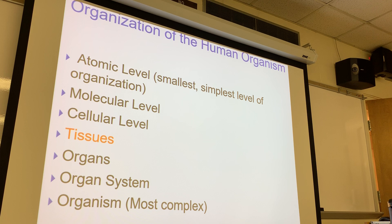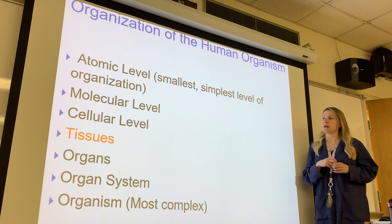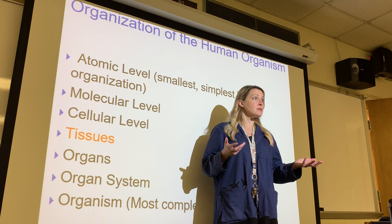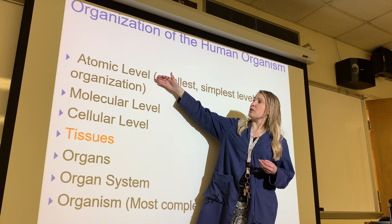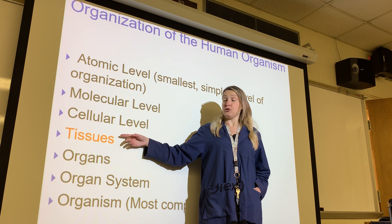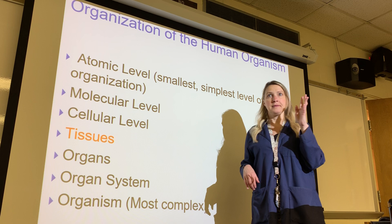Multiple cells, sometimes of the same type and sometimes of different types, come together to form tissues. For example, epithelial cells come together to form epithelial tissue, and cardiac muscle cells come together to form cardiac muscle tissue. We'll cover tissues at the end of Chapter 1, the atomic and molecular levels in Chapter 2, and cells in Chapters 3 and 6. What are our four primary types of tissues?